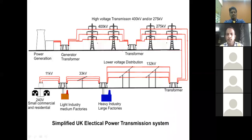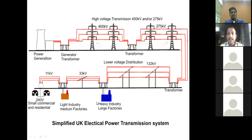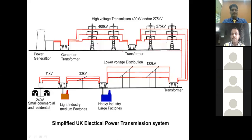Small-scale industry works on 33 kV. At our houses, the 33 kV is stepped down to 11 kV for domestic applications or small commercial applications. This is the basic block diagram of how electrical energy moves from generating station through transmission and distribution networks to reach homes, residential areas, and colleges — called utilization. Totally, electrical energy flow is divided into four stages: generation, transmission, distribution, and utilization.